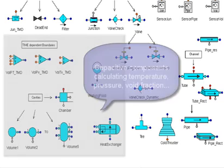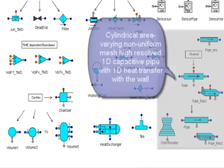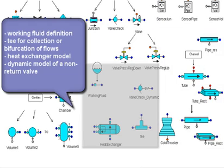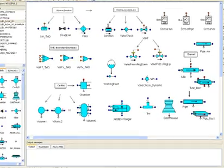Advanced components include a cylindrical area-varying non-uniform mesh high-resolved 1D capacitive pipe with 1D heat transfer with the wall, working fluid definition, T-junctions for collection or bifurcation of flows, a heat exchanger model, and a dynamic model of a non-return valve.